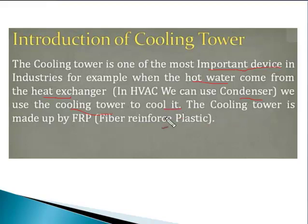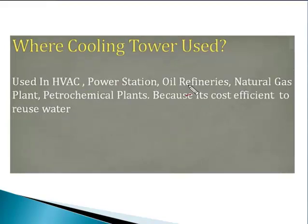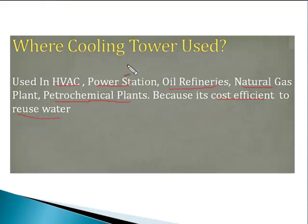The cooling tower is made of FRP — fiber reinforced plastic. What does a cooling tower do? Cooling towers are used to transfer heat from cooling water to the atmosphere, promote efficient water usage, and prevent environmental damage. The real applications of cooling towers include HVAC systems, power stations, oil refineries, natural gas plants, and petrochemical plants, because it is cost-efficient to reuse water.